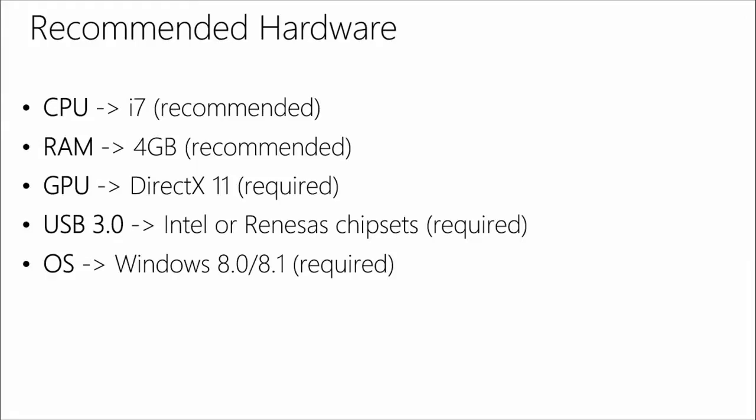For recommended hardware: on the CPU side we recommend an i7; 4 GB RAM; DirectX 11 for GPU, which is required since we use it to run our tracking engines; USB 3 with Intel or Renesas chips, also required; and Windows 8.0 or 8.1, mostly for USB 3 support. With this new sensor, very little is computed on the device — what gets sent from the sensor is 10 infrared subframes. On the GPU and CPU in the runtime, we calculate the IR frame, depth frame, and all higher-level data, so DirectX 11 is needed for that.